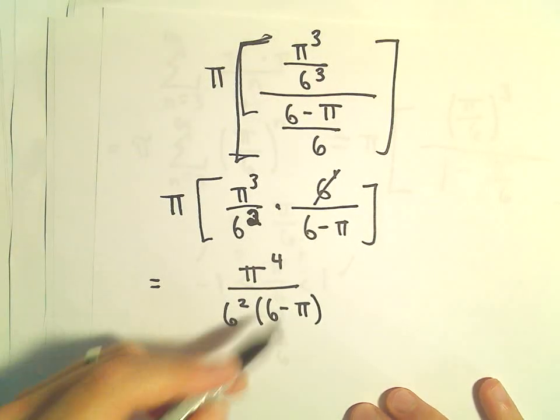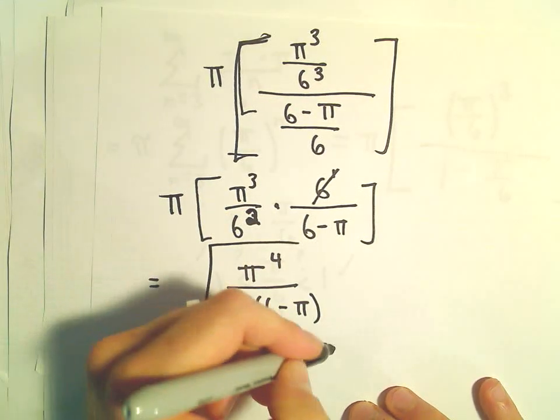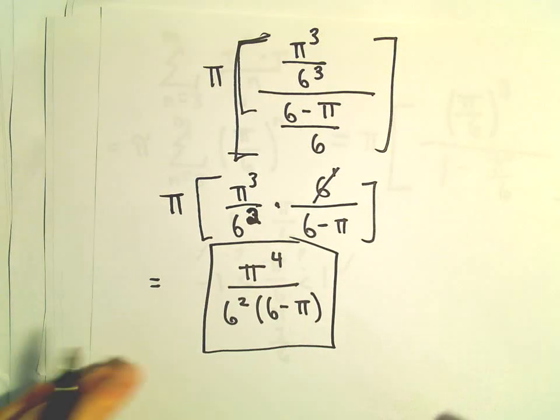And I'm going to leave it like that. Again, you could make this 36. You could distribute it out. But that would be the sum of our geometric series in this case.